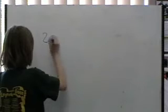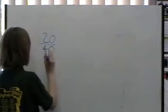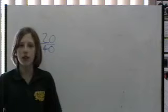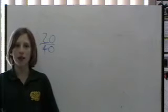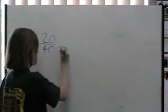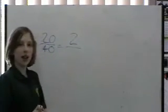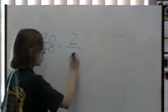We're going to simplify 20 on 40. To do simplifying, you have to find a number that goes into both of them. Let's try 10. So 10 into 20 goes twice, and 10 into 40 goes 4 times.